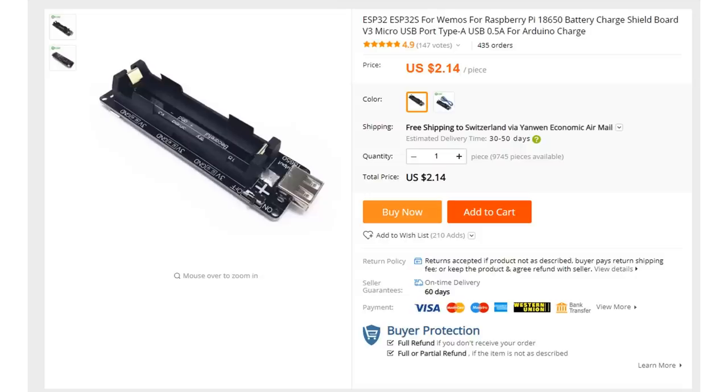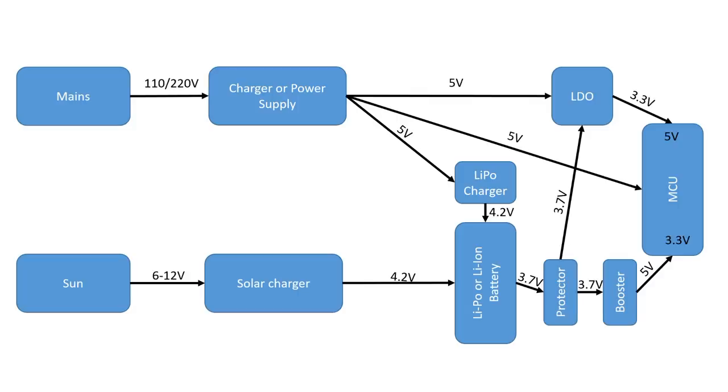What is on this small board for $2.14? It contains a battery holder, a LiPo charger, three LDOs, an under-voltage protection and a boost converter. Very similar to a power bank. So let's check it out.